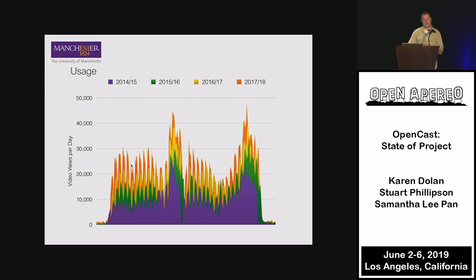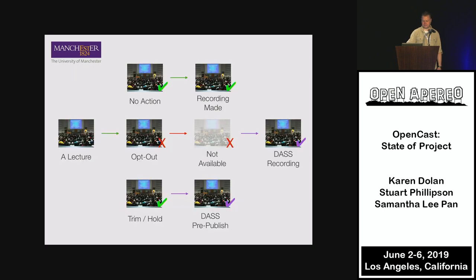In usage terms, because Opencast is very robust, we haven't seen any downtime for two and a half years, which is incredibly valuable to students. Looking at an entire academic year, you can see two big blobs representing examination periods — having a robust delivery platform is critically important because students make use of recorded lectures so much around exam times.